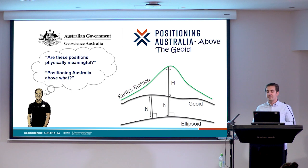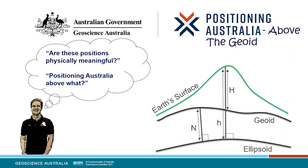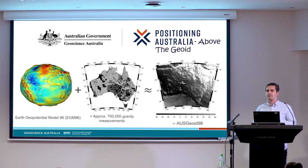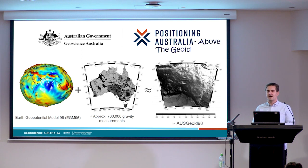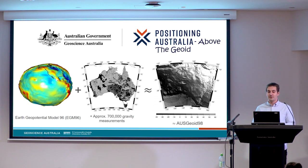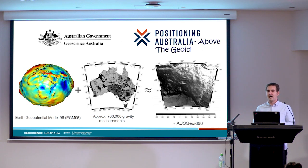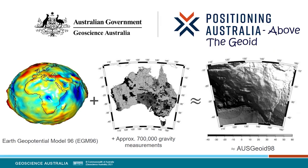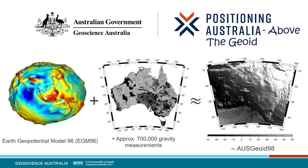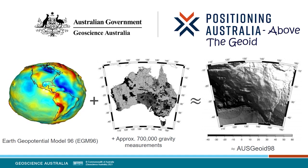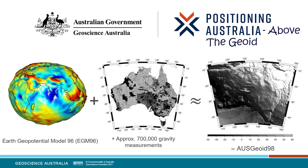To get physically meaningful heights from GPS and position Australia in a physically meaningful sense, we need a model of where the geoid sits in space, or at least where it sits relative to an ellipsoid used for GPS positions — a model of the N values shown here. Geoid models are determined from measurements of the subtle changes in the strength of gravity, and they really come in two flavours: global models, mostly determined from satellite data, and regional models. Regional models typically start life as a global model, and then extra gravity measurements are added in that are generally only available locally to create a more accurate local or regional model.